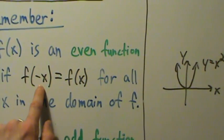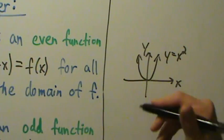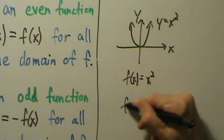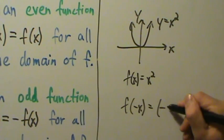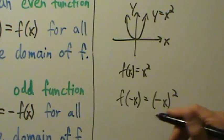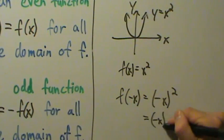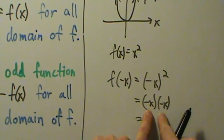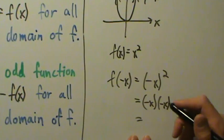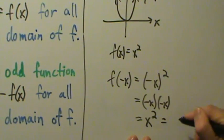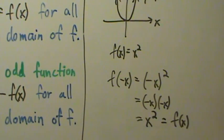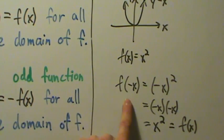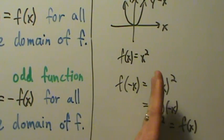Remember, f of negative x equals f of x for all x in the domain of f. So if f of x equals x squared, what is f of negative x? Well, f of negative x is just negative x quantity squared, which is negative x times negative x. The negatives cancel because negative times negative is positive, and you just end up with x squared, which is just f of x. That's why x squared is an even function — f of negative x equals f of x no matter what x is.